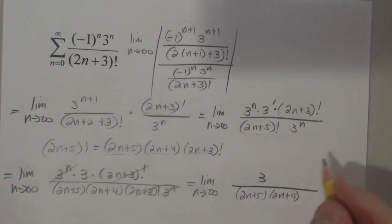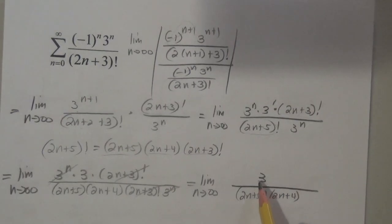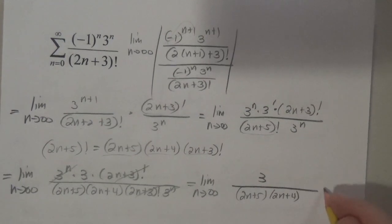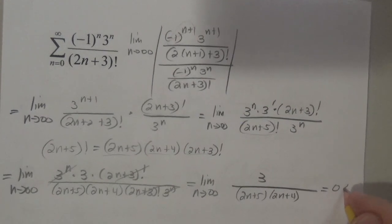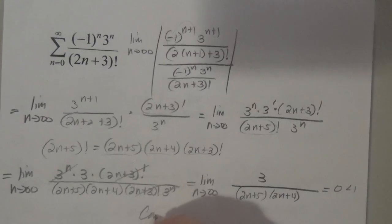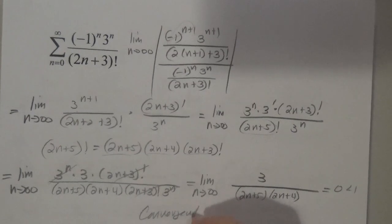(2n + 5), (2n + 4). There's no n's in the numerator, it's just 3. Bunch of n's in the denominator. Clearly this is zero, which is less than one, which makes it convergent.